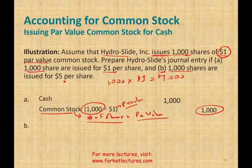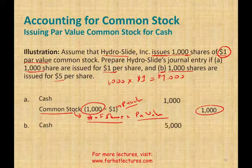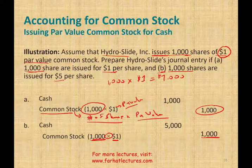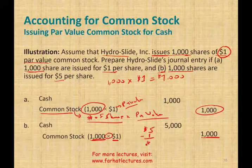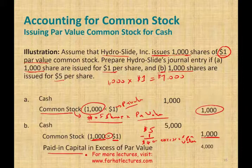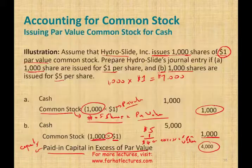Part B: 1,000 shares are issued for $5 each. The company receives $5,000 cash. We credit common stock for number of shares times par value — $1,000. The entry doesn't balance, so anything extra above par is called 'excess of par.' Each stock sold at $5 minus $1 par value leaves $4 excess. We call this paid-in capital in excess of par value — $4,000. This is an equity account. So total: debit cash $5,000, credit common stock $1,000, credit paid-in capital in excess of par $4,000.